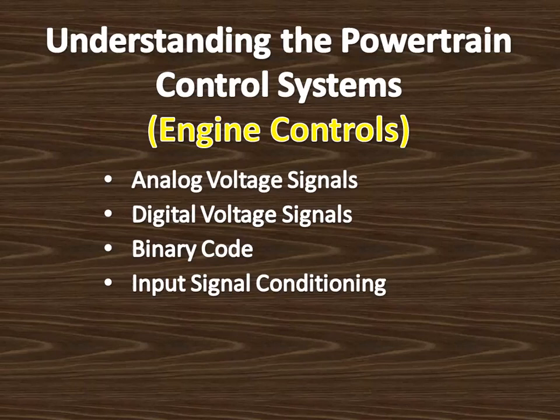Some input sensors, such as the O2 or oxygen sensor, produce a very low voltage signal with a low current flow. This type of signal must be amplified or increased before it is sent to the microprocessor. The input amplification and signal conditioning chip also provides the necessary signal amplification.